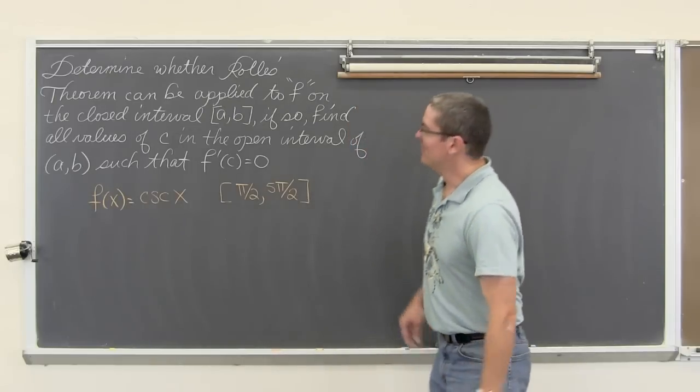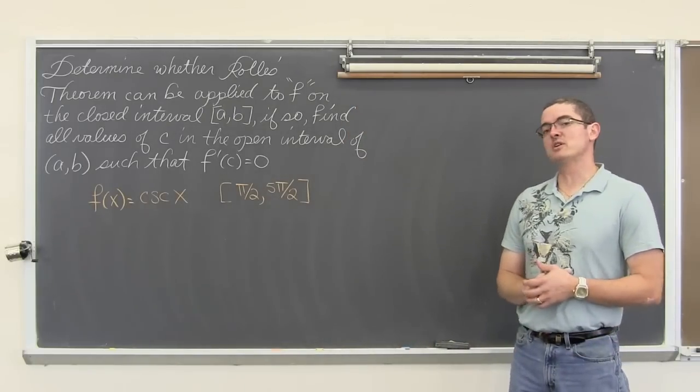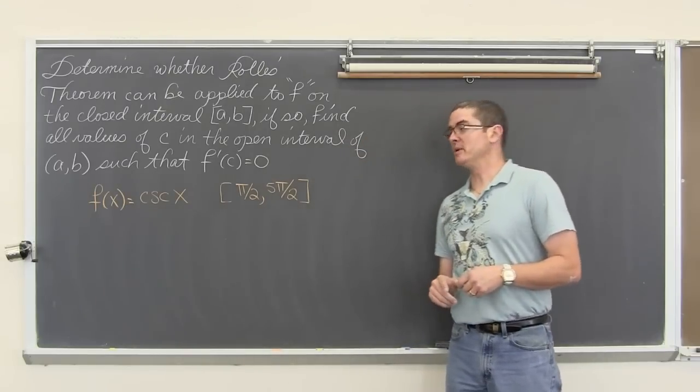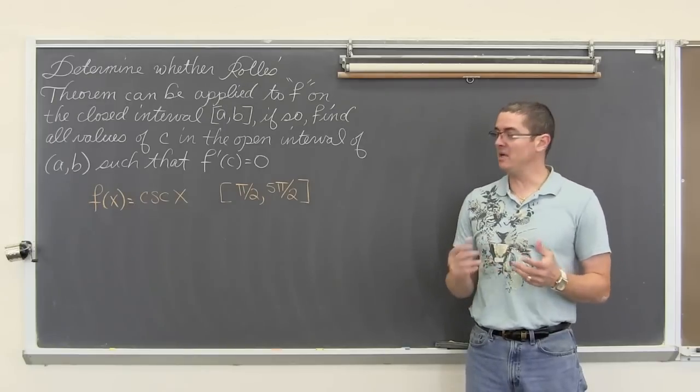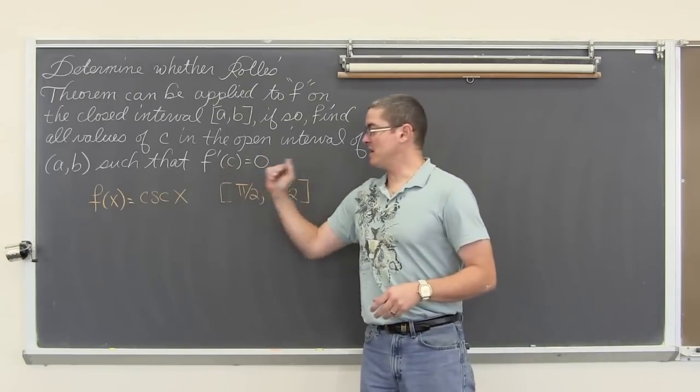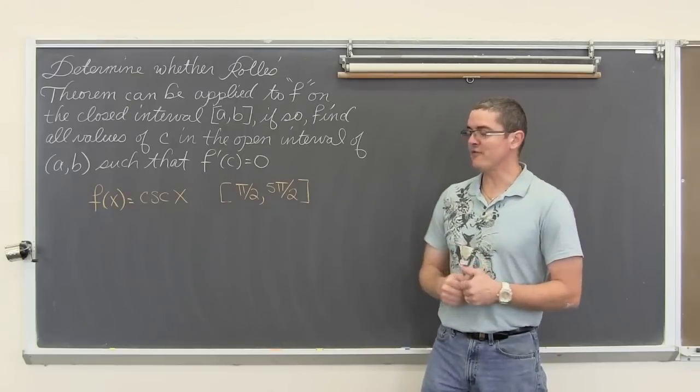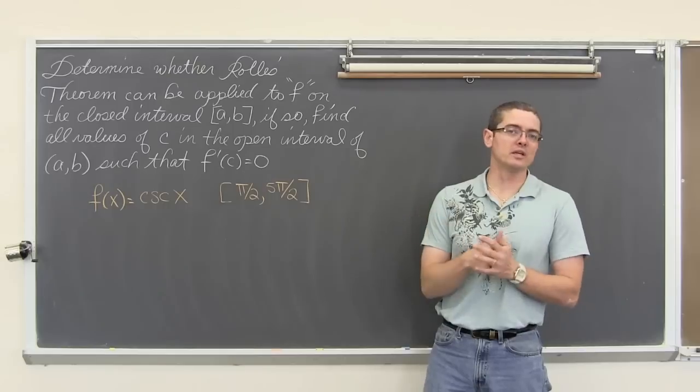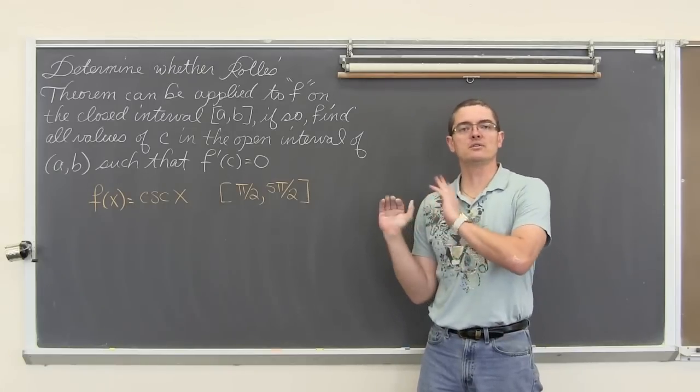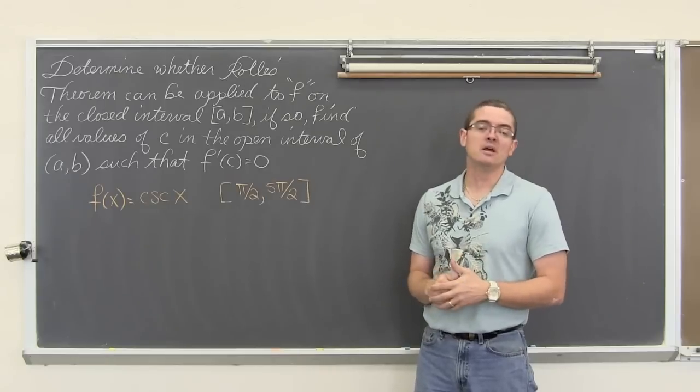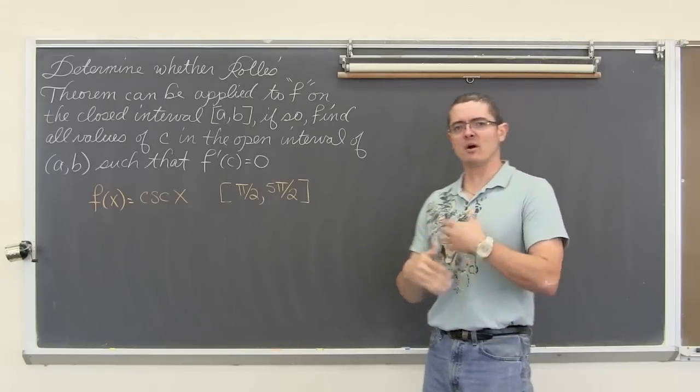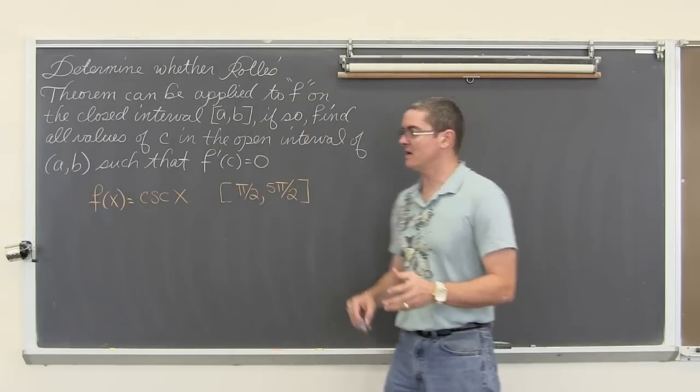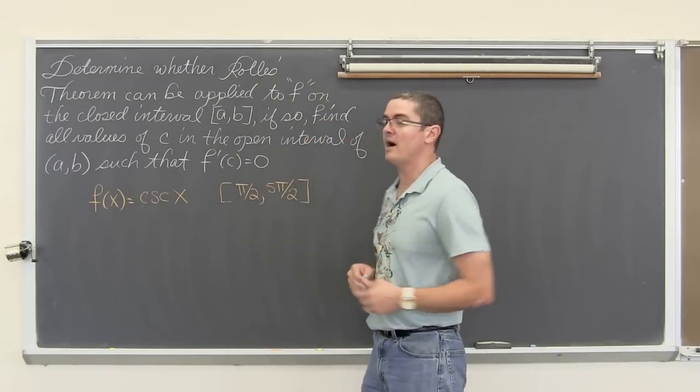Bam! Last example. Determine whether Rolle's Theorem can be applied to the function f on a closed interval of [a, b]. If so, find all values of c in the open interval of (a, b) such that the derivative f'(c) is equal to zero. So our function here is f(x) is equal to the cosecant of x. Our closed interval is pi over two to five pi over two. And if you really know your trig functions, you will know to just basically say I can't apply Rolle's Theorem, explain and move on. But we are going to walk through a couple of steps just to refresh some of your trig skills if you need it, and ultimately get to the point of why doesn't this work.